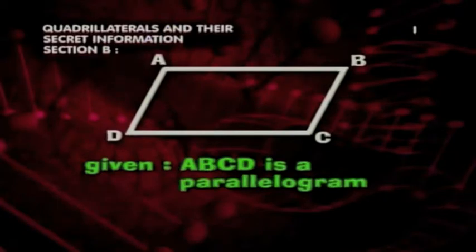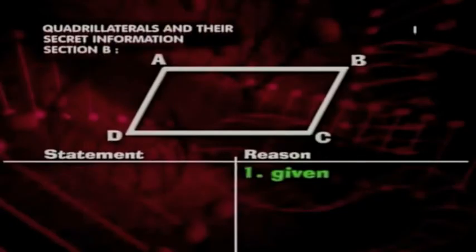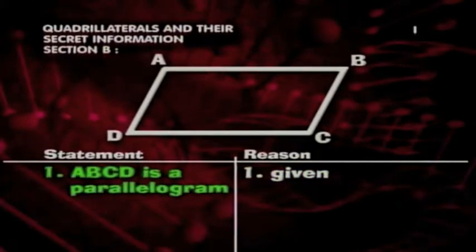Given that ABCD is a parallelogram, prove that segments AB and CD are congruent, and segments AD and BC are congruent. Our first step is to state our given information. ABCD is a parallelogram.